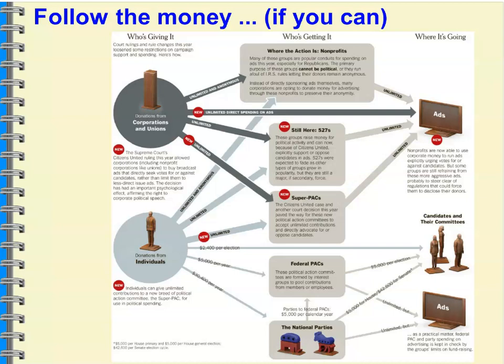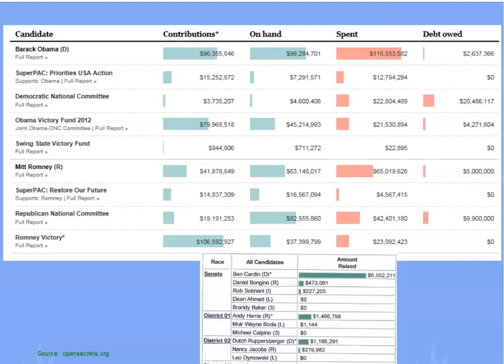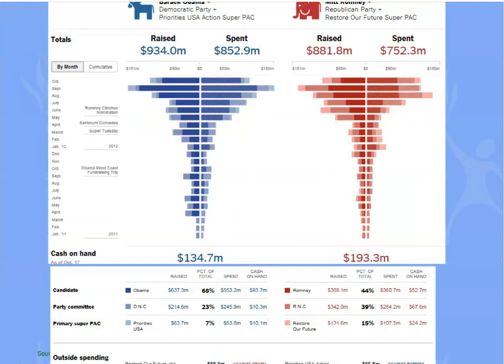Corporations and unions can set up their own 527s, super PACs, and even 501c4s — as long as the 501c4 is primarily not political in nature. Citizens United really changed the game in terms of where the money goes. Instead of going into hard money within campaigns, the money is going outside to super PACs, 527s, and 501c4s. We saw this in 2008, even more so after Citizens United in 2012 and 2016, and we will see it again in 2020. The money is coming in from outside groups, from Democrats and Republicans alike, from all regions of the country.